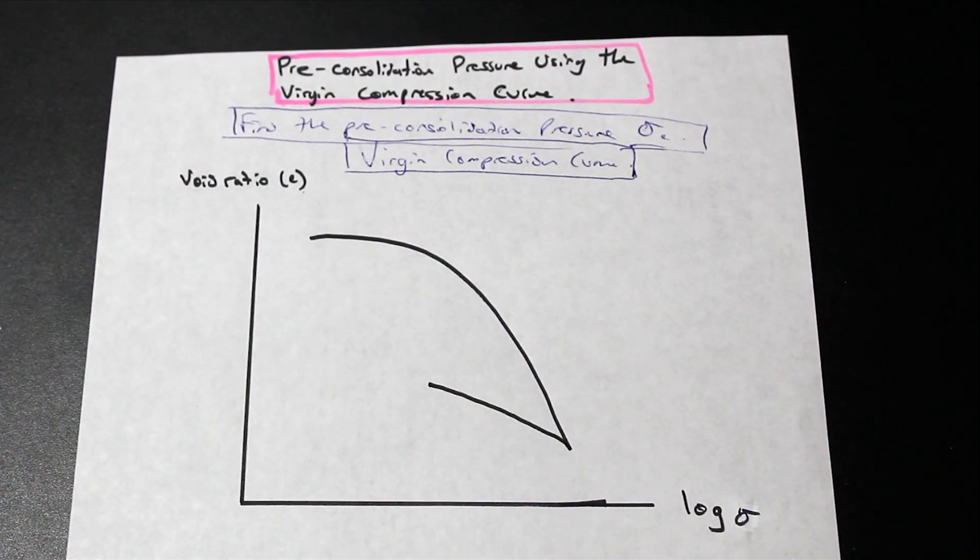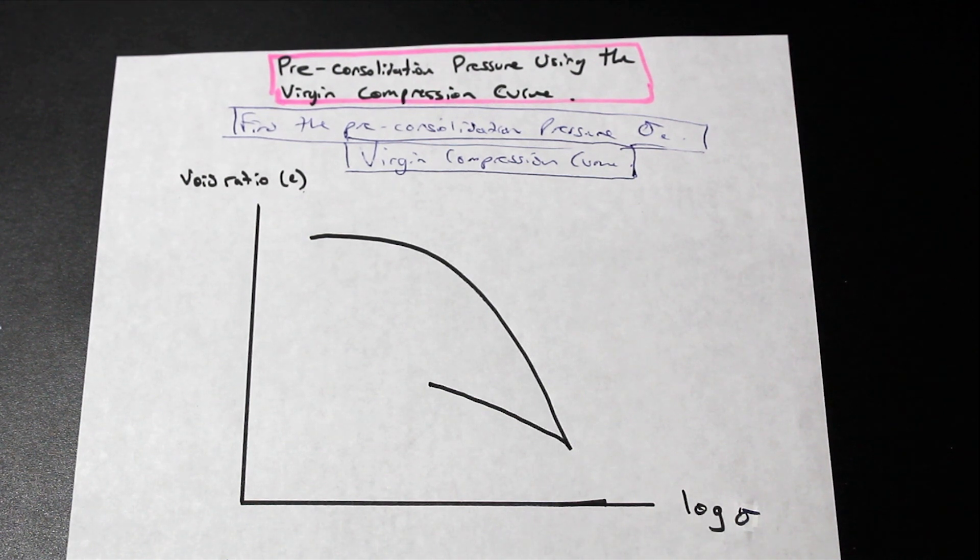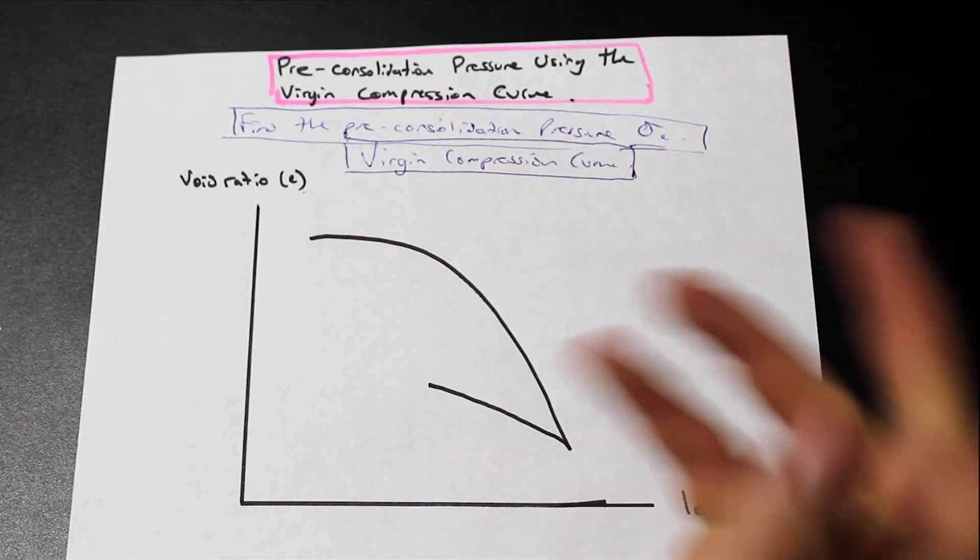So we have the virgin compression curve here. Don't worry if you don't know what that is right away, I'll give you a quick explanation. And we're asked to find the pre-consolidation pressure sigma c.